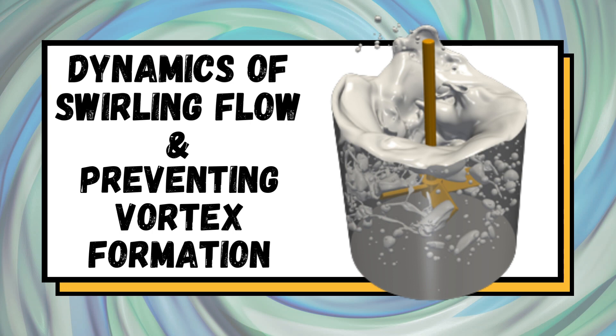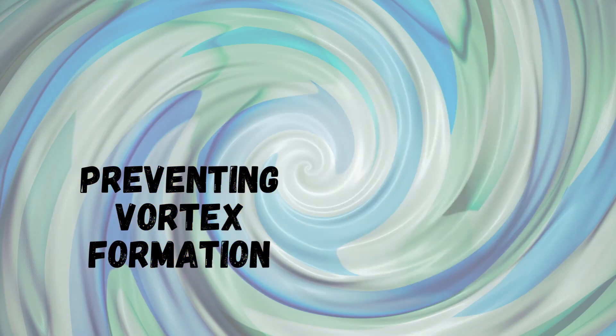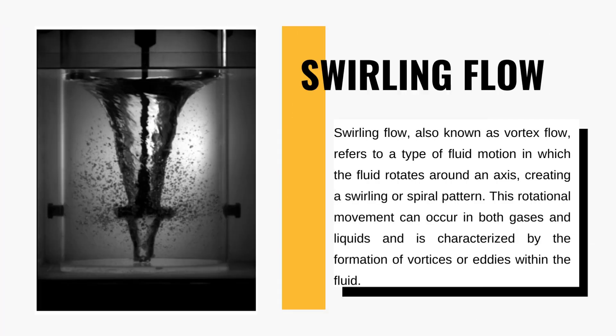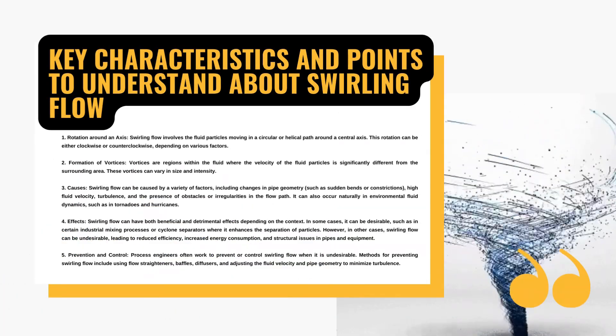Firstly we'll begin our discussion with what is swirling flow. Swirling flow is a type of fluid motion where the fluid rotates around an axis and creates a mesmerizing swirling or spiral pattern. This phenomena can occur in both gases and liquids and has some interesting characteristics.